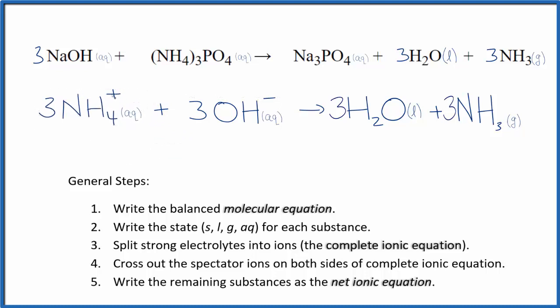If we look at charge, we have three times one plus (that's three plus), three times one minus (that's three minus), so on this side we have a net charge of zero. Over here everything's neutral - net charge of zero.